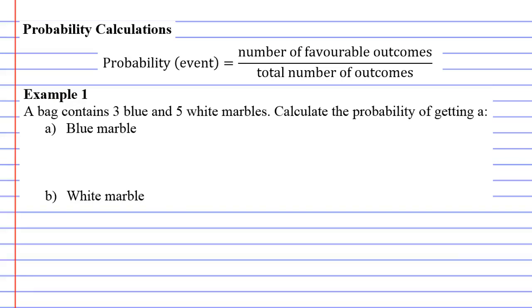Probability calculations. Now we have a formula for this which just says probability of event equals number of favourable outcomes over total number of outcomes. I really don't use the formula. I think it's quite easy to do these just using a bit of common sense.